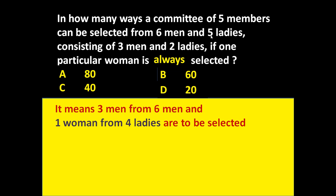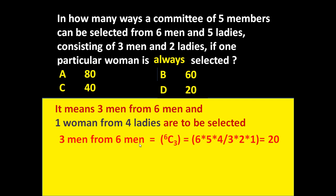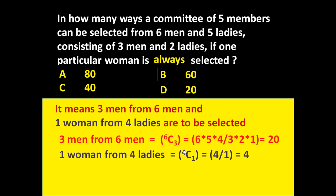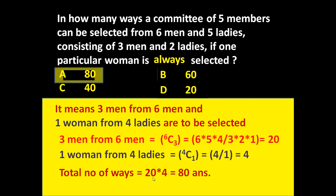Since one woman is always selected, we need to select one more woman from the remaining four ladies. So three men from six men is 6C3, equal to twenty ways. One woman from four ladies is 4C1, equal to four ways. Total number of ways is twenty into four, equal to eighty.